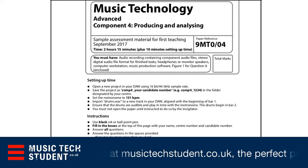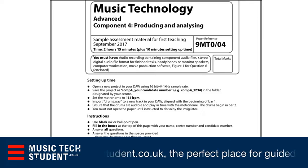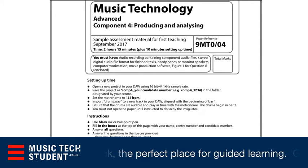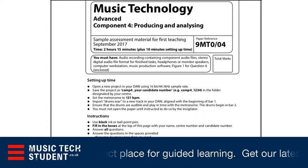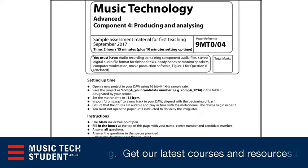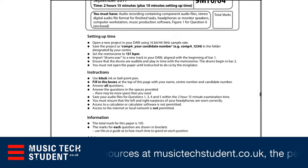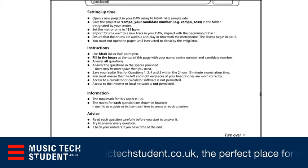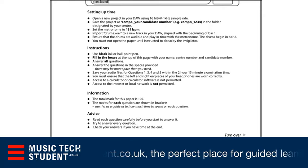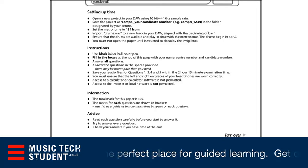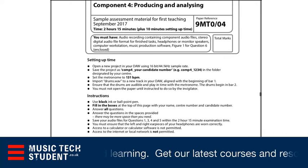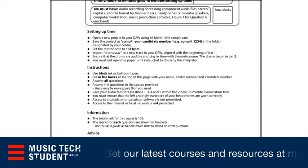Then set up the metronome for the project and finally it says import the first track and just make sure that it works and that you understand it has to go in a very specific position. As you go through each of these questions they are going to ask you to put the tracks in a very specific position. This one here is at the beginning of bar one. You will need a black ink or ballpoint pen, fill in all the boxes at the top of the page, and then answer all the questions.